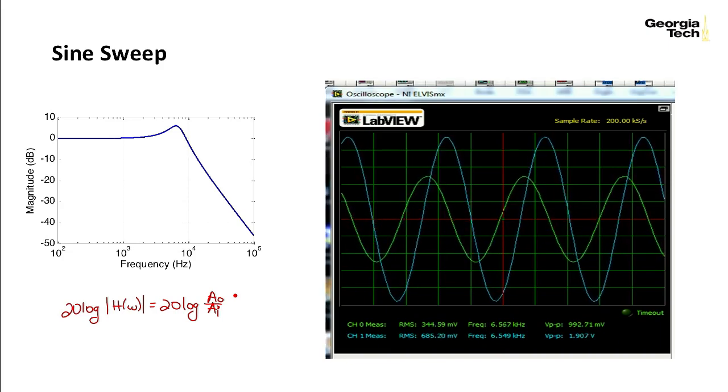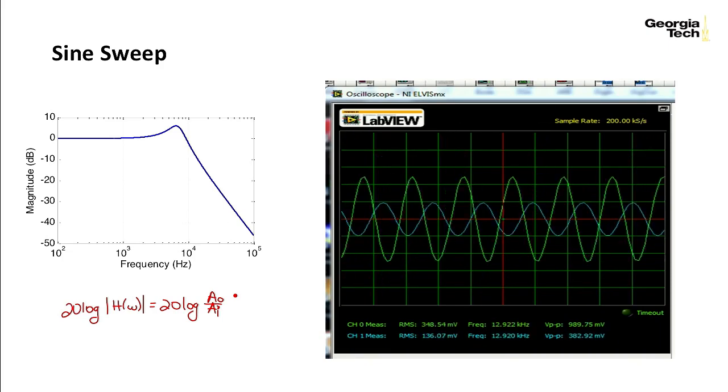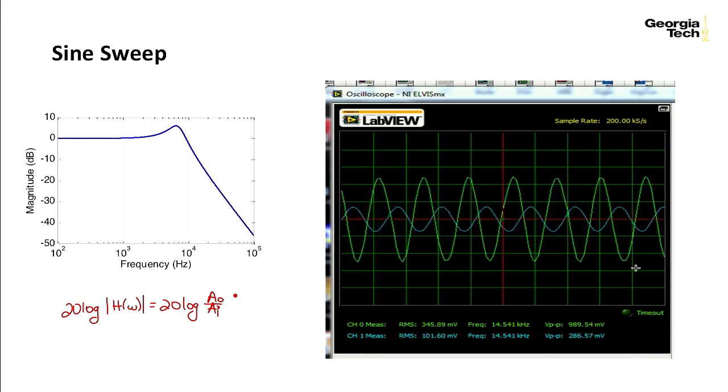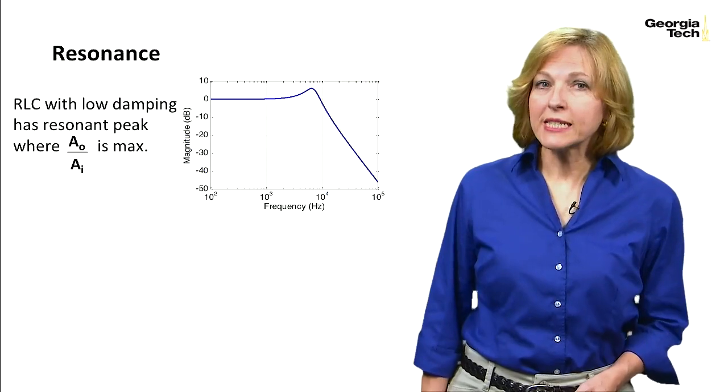If I then increase the frequency a little bit more, and I keep slowly increasing that frequency, you see that the output amplitude starts going down and down. So here it is at close to 15,000 Hz, and you see that the output amplitude is much smaller now than the input amplitude.